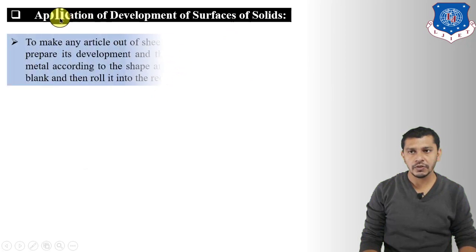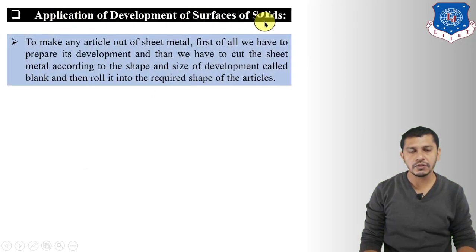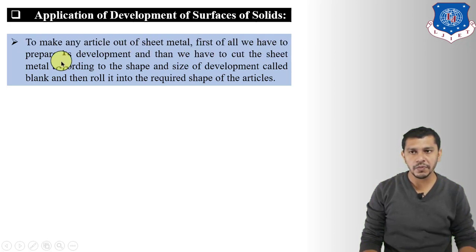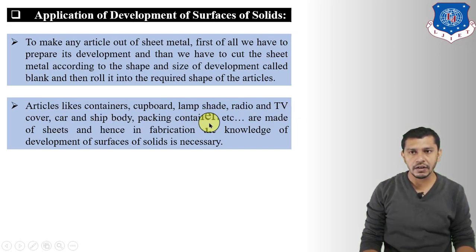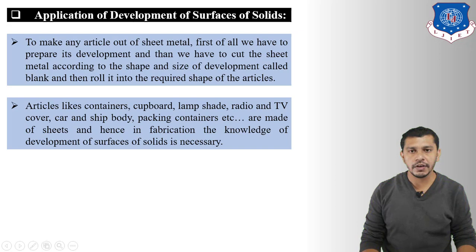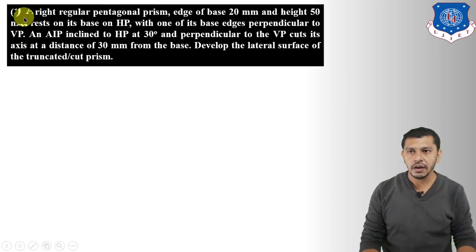Development of surfaces of solids is used in sheet metal work to make articles from sheet metal. First we prepare the development, then cut the sheet metal according to the shape and size of the development — called the blank — and then roll it into the required shape. Articles like containers, cupboards, lampshades, radio and TV covers, car and ship boarding, and packing containers are made of sheets, so knowledge of development of surfaces is necessary.